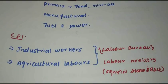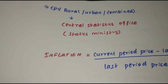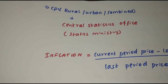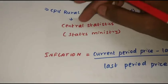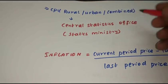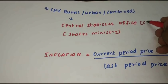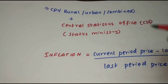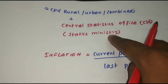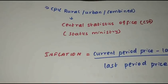The CPI is rural-urban combined. The CPI is a rural-urban combined index. Who is the Central Statistics Office? That is why CSO — the Statistics Ministry — releases this data.